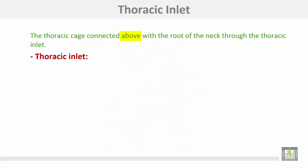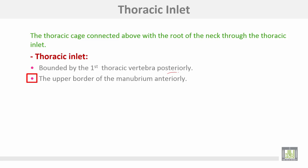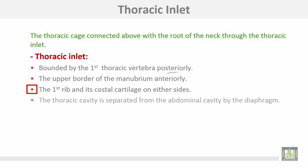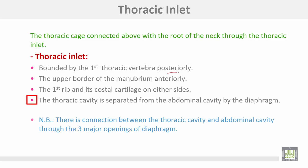The thoracic inlet, connecting the thoracic cage with the root of the neck, is bounded by the first thoracic vertebra posteriorly, the upper part of the manubrium sternum anteriorly, and the first rib and its costal cartilage on either side. The thoracic cavity is separated from the abdominal cavity by the diaphragm.